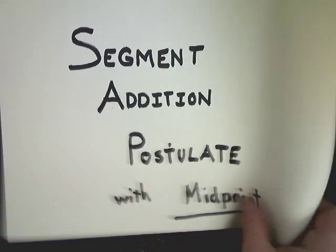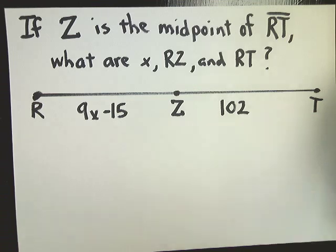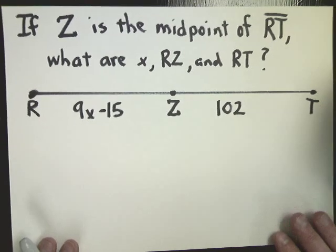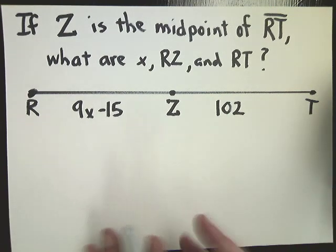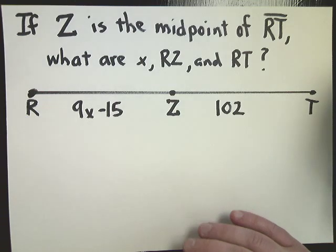This is the type of problem you might see with that. It might say, if Z is the midpoint of RT, what are x, RZ, and RT? Now before we talked, if you saw the segment addition postulate anyway, otherwise you have no idea what I'm talking about. The most important thing that you can do is make a statement about the picture. Now in this case, it's important to do two statements about the picture. The first is the same one we did in the segment addition postulate.